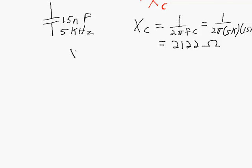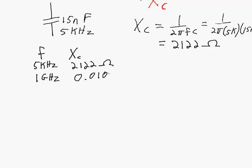The same capacitor — what happens as frequency changes? At 5 kilohertz, capacitive reactance is 2,122 ohms. But if we increase that frequency way up to 1 gigahertz, it works out to 0.0106 ohms — a much higher frequency gives a much lower capacitive reactance. Now if we drop the signal way down to 5 hertz, a really low frequency, the capacitive reactance works out to 2.12 megaohms. So a capacitor is going to look more and more like an open circuit the lower the frequency is.